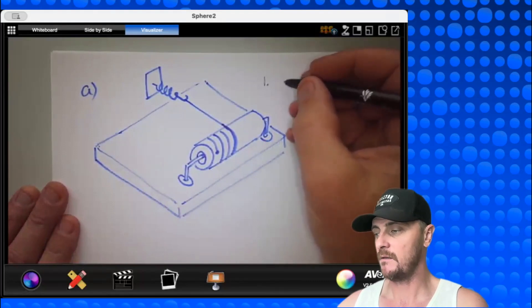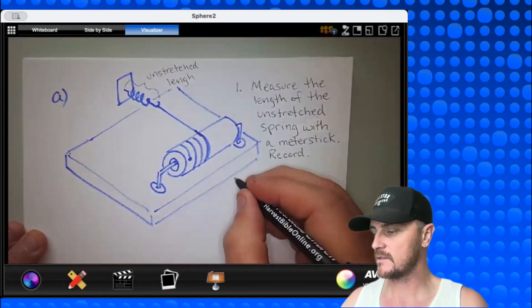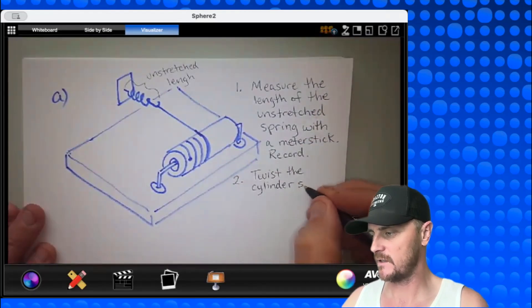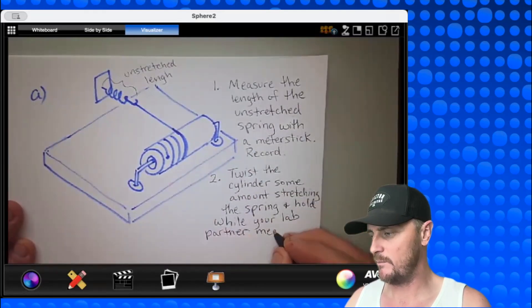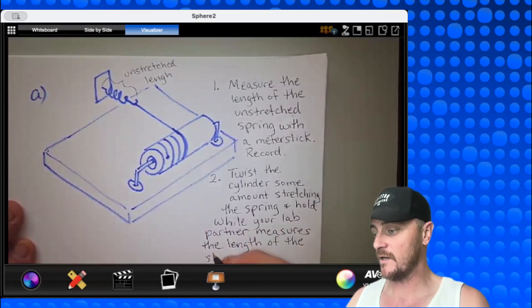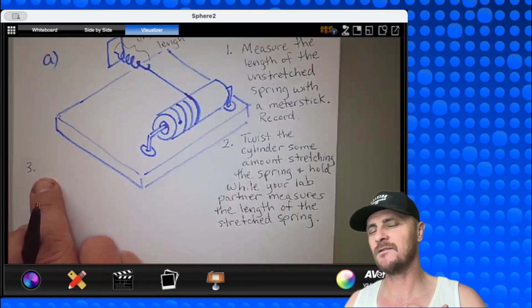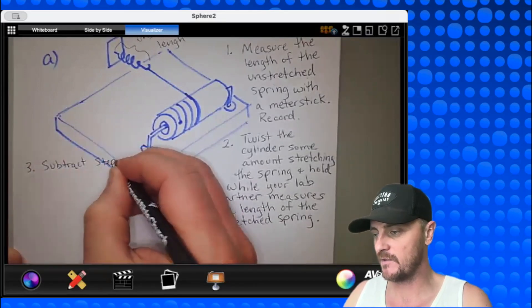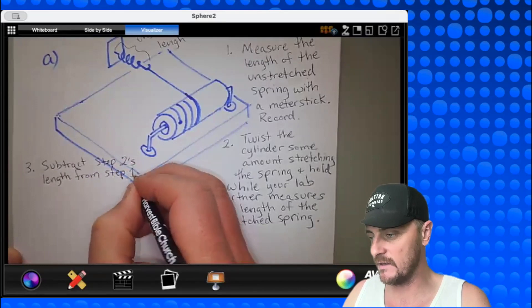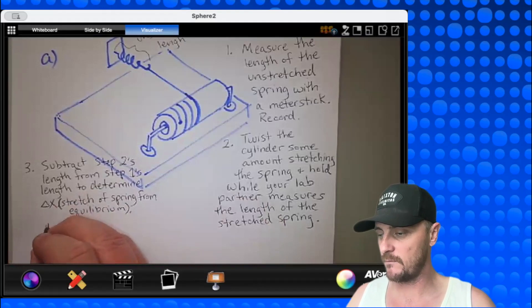So step one would be measure the length of the unstretched spring with a meter stick and record. Step two, twist the cylinder some amount stretching the spring and hold while your lab partner measures the length of the stretched spring. Alright, step two done.